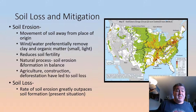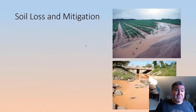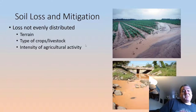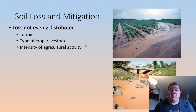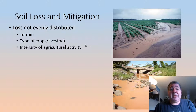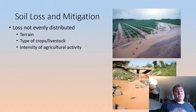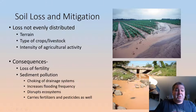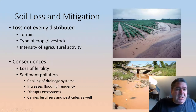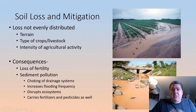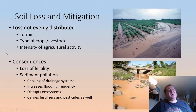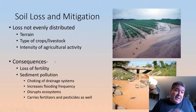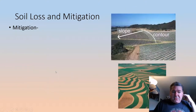This should highlight the idea that, at least on our timescale, soils are a non-renewable resource. Soil loss is not evenly distributed everywhere — steeper terrain will have more erosion, and the type of crops, livestock, and intensity of agricultural activity all vary how much soil erosion there is. Consequences include loss of fertility, sediment pollution choking drainage systems, increased flooding, disrupted ecosystems, and carrying fertilizers and pesticides that are harmful to biological systems. The more soil we lose, the less we have to use, and we're going to need more, not less, in the future.